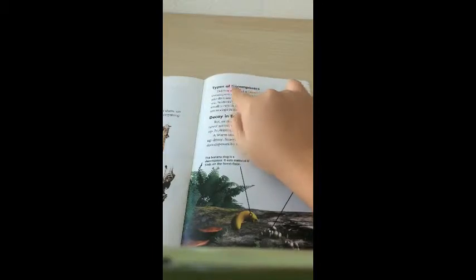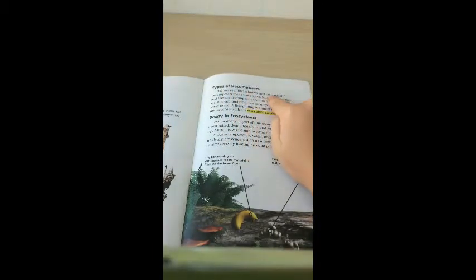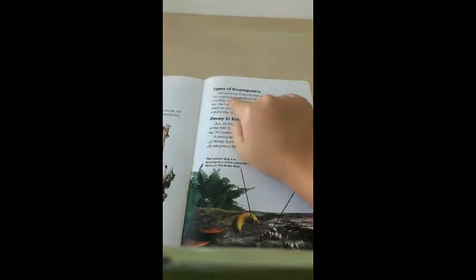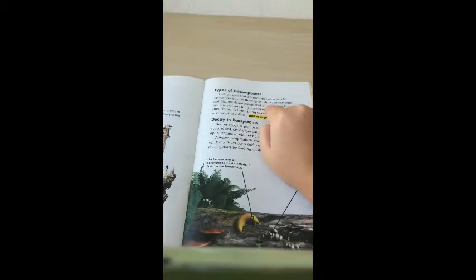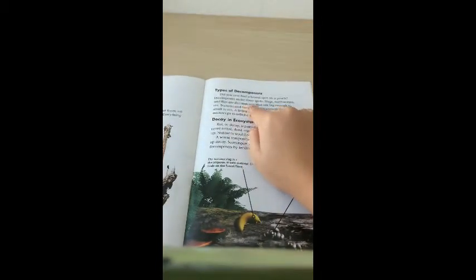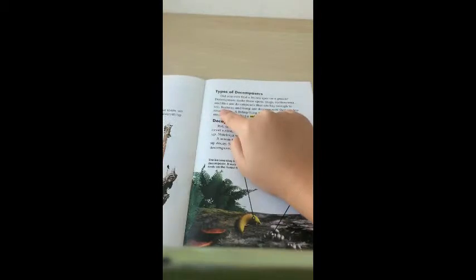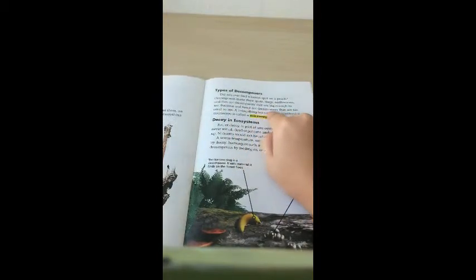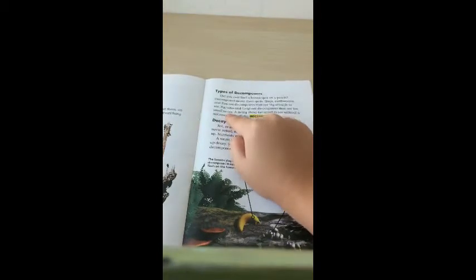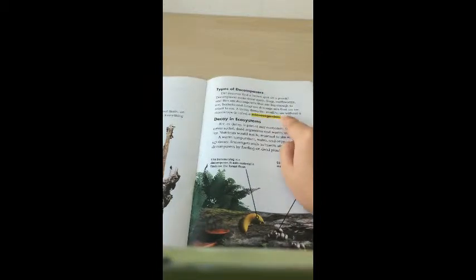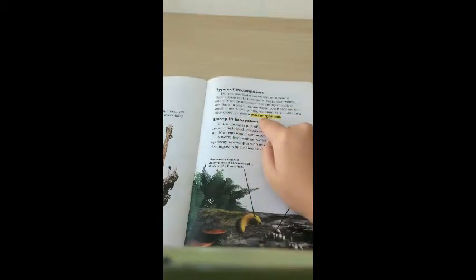Types of decomposers. Did you ever find a brown spot on a peach? Decomposers make these spots. Slugs, earthworms, and flies are decomposers that are big enough to see. Bacteria and fungi are decomposers that are too small to see. A living thing too small to see without a microscope is called a microorganism.